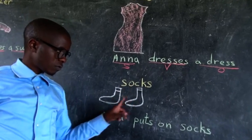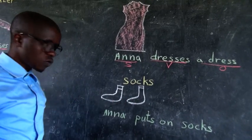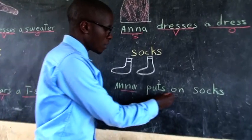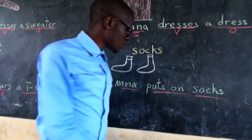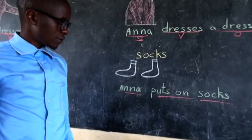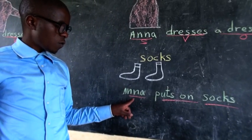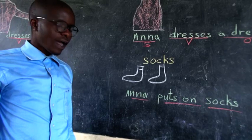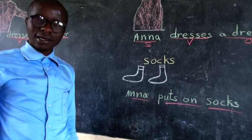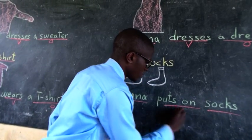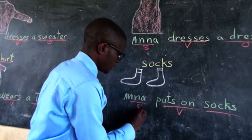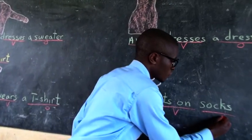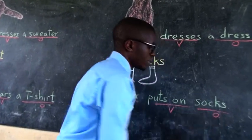Socks. To make a sentence, you can say: Anna puts on socks. Someone who does an action is Anna — the subject. The action Anna does is to put on. What does Anna put on? Socks — the object.